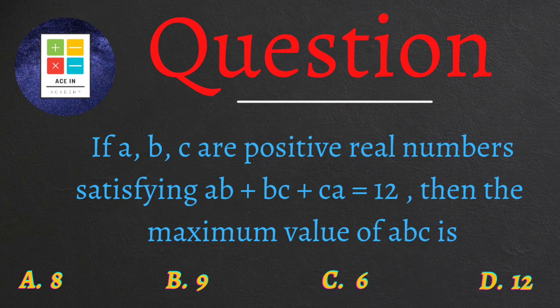Now the question is as follows: If a, b, and c are positive real numbers satisfying ab + bc + ca = 12, then the maximum value of abc is? Now we have provided four options for this question: Option A is 8, option B is 9, option C is 6, and option D is 12.